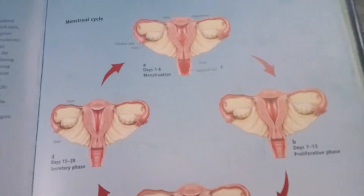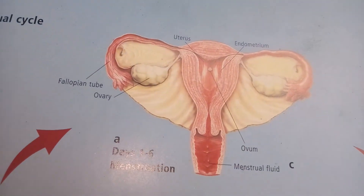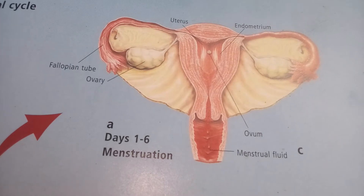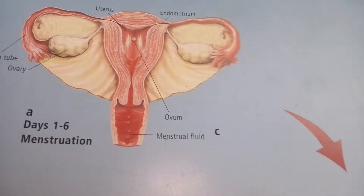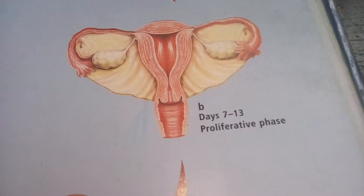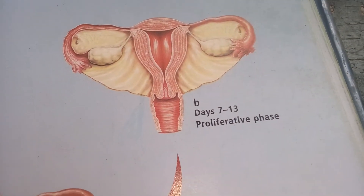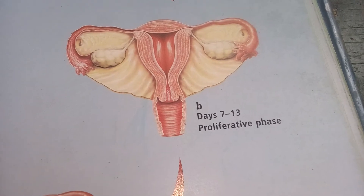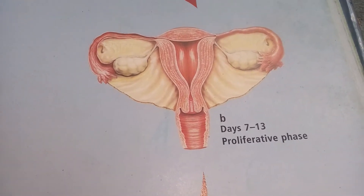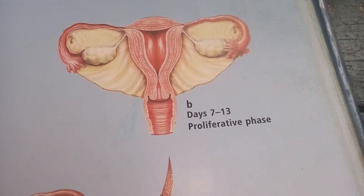The menstrual cycle of a woman is 28 days. The first six days is the menstruation. Then from there, the second phase is called the proliferative phase, where the uterus is being prepared for ovulation.